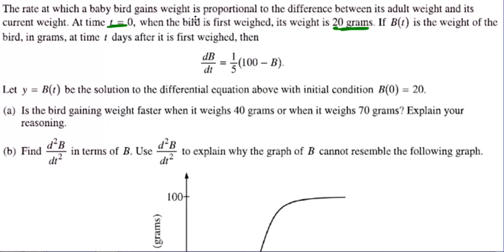If B of T, capital B of T, is the weight of the bird in grams at time T days after it's first weighed, then we've got this differential equation here. Now notice, let's just talk a minute about the setup of this equation. They explained it in words. They said that the rate at which the baby bird gains weight, so dB/dt, is proportional.